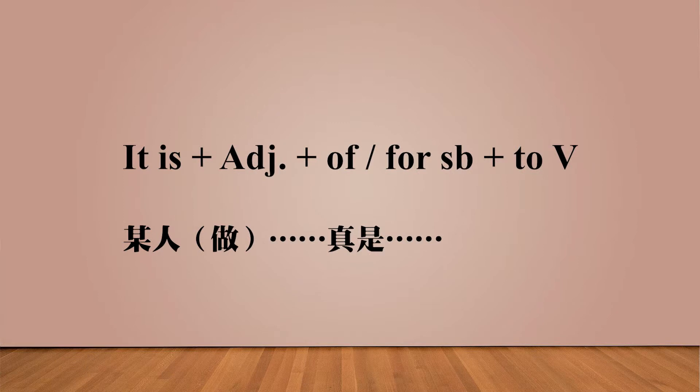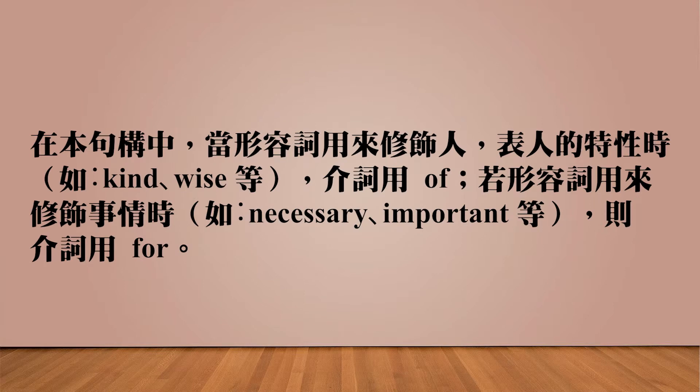等两个小时真的很难受！这个句型是「某人做什么事情，真是如何」，常用结构为 It is + 形容词 + for someone 或 of someone + to do something。特别注意：用 of 时，讲的是这个人的特性、特质；用 for 时，讲的是事情本身怎么样。